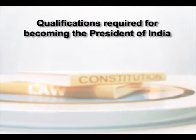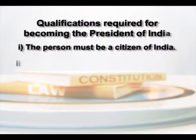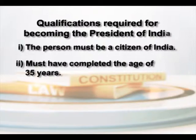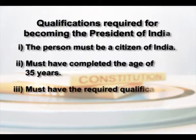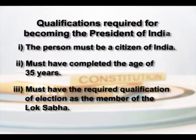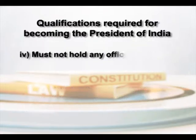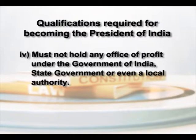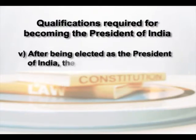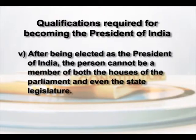Now let us see the essential qualifications required for a person to become the President of India. First, the person must be a citizen of India. Second, must have completed the age of 35 years. Third, must have the required qualification for election as a member of the Lok Sabha. Fourth, must not hold any office of profit under the Government of India, state government, or even a local authority. And finally, Article 59 provides that after being elected as President, the person cannot be a member of both Houses of Parliament and even the state legislature.